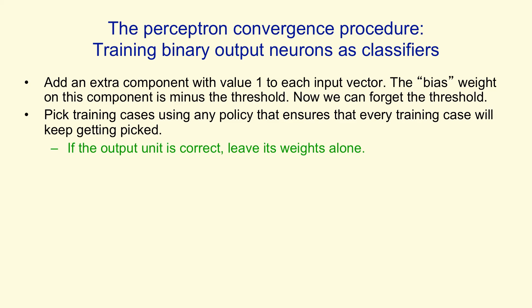Now, having picked a training case, you look to see if the output's correct. If it is correct, you don't change the weights. If the output unit outputs a 0 when it should have output a 1, in other words it said it's not an instance of the pattern we're trying to recognize when it really is, then all we do is we add the input vector to the weight vector of the perceptron.